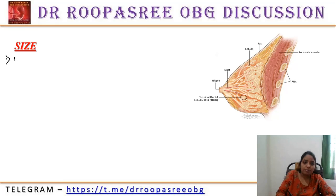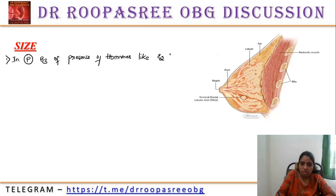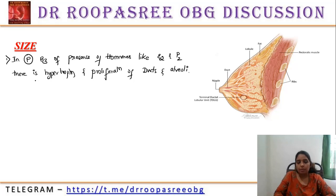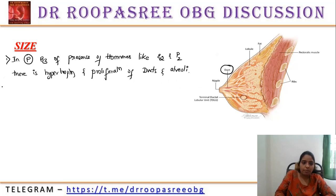In pregnancy, because of the presence of hormones like estrogen and progesterone, there is hypertrophy and proliferation of ducts and alveoli. In puberty, there is proliferation of only the fibro-fatty connective tissue, but in pregnancy, the ducts and the alveoli part will get proliferated.